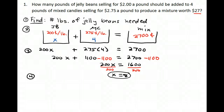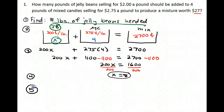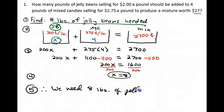Solving the equation gives x = 8. Going back to the picture, x stood for the amount of jelly beans — exactly what we were trying to find. Therefore, we need 8 pounds of jelly beans.